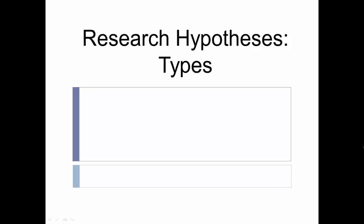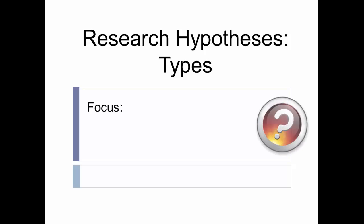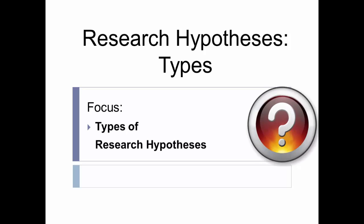You'll probably recall that to be a scientific hypothesis, a statement needs to make a prediction, an educated guess, and be both testable and falsifiable. But there's a bit more to hypotheses than that. This video will focus on explaining three different types of research hypotheses, and then mention some alternative terms loosely related to hypotheses that are often used in survey research.